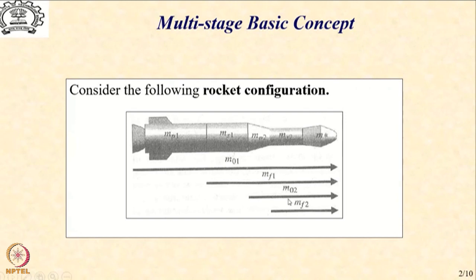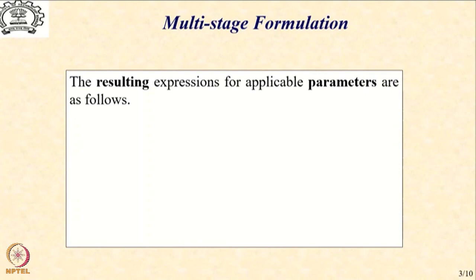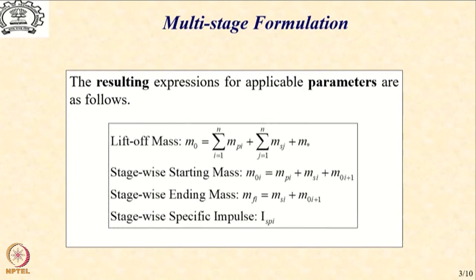The cycle continues: when the second stage completes its operation, it would have burnt the propellant MP2 and what is left will be MF2, and then of course the subsequent stages. We can now write M01, MF1, etc. in terms of the applicable parameters as shown here.